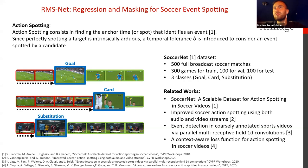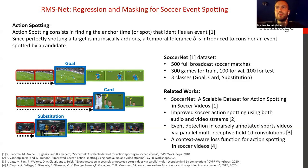Just a brief recap of what action spotting is. Action spotting is a task which aims to find the exact timestamp of an event inside the video clip. This kind of task fits very well with sports and soccer, since we have strict rules which define when an event occurs. For example, we have a goal when the ball crosses the goal line, so we can define an event with an exact timestamp. For RMSNet, we use the SoccerNet V1 dataset, which has been released two or three years ago, and it involves 500 full broadcast matches with three classes annotated: the goal, the card, and the substitution class.